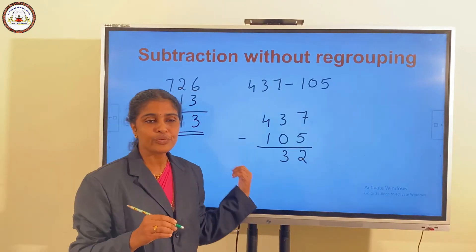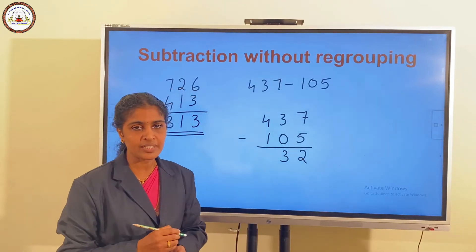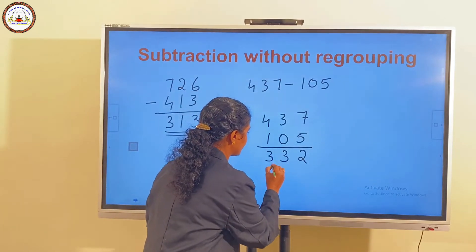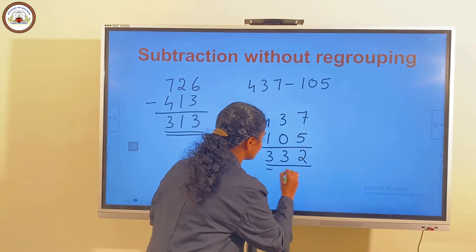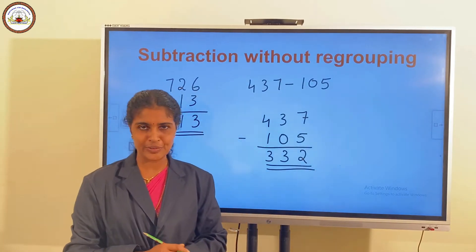And 4 minus 1 is 3. So, the answer is 332.